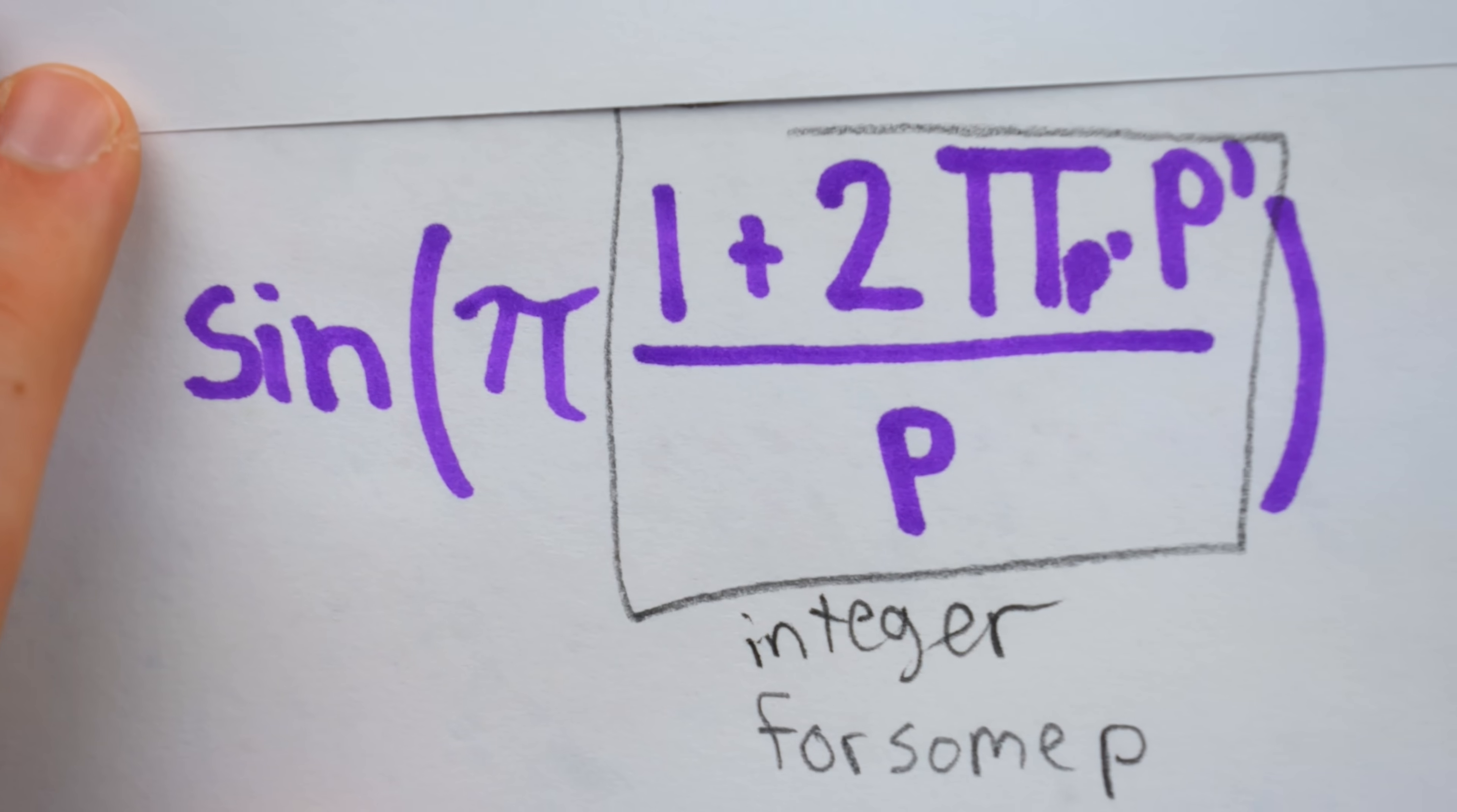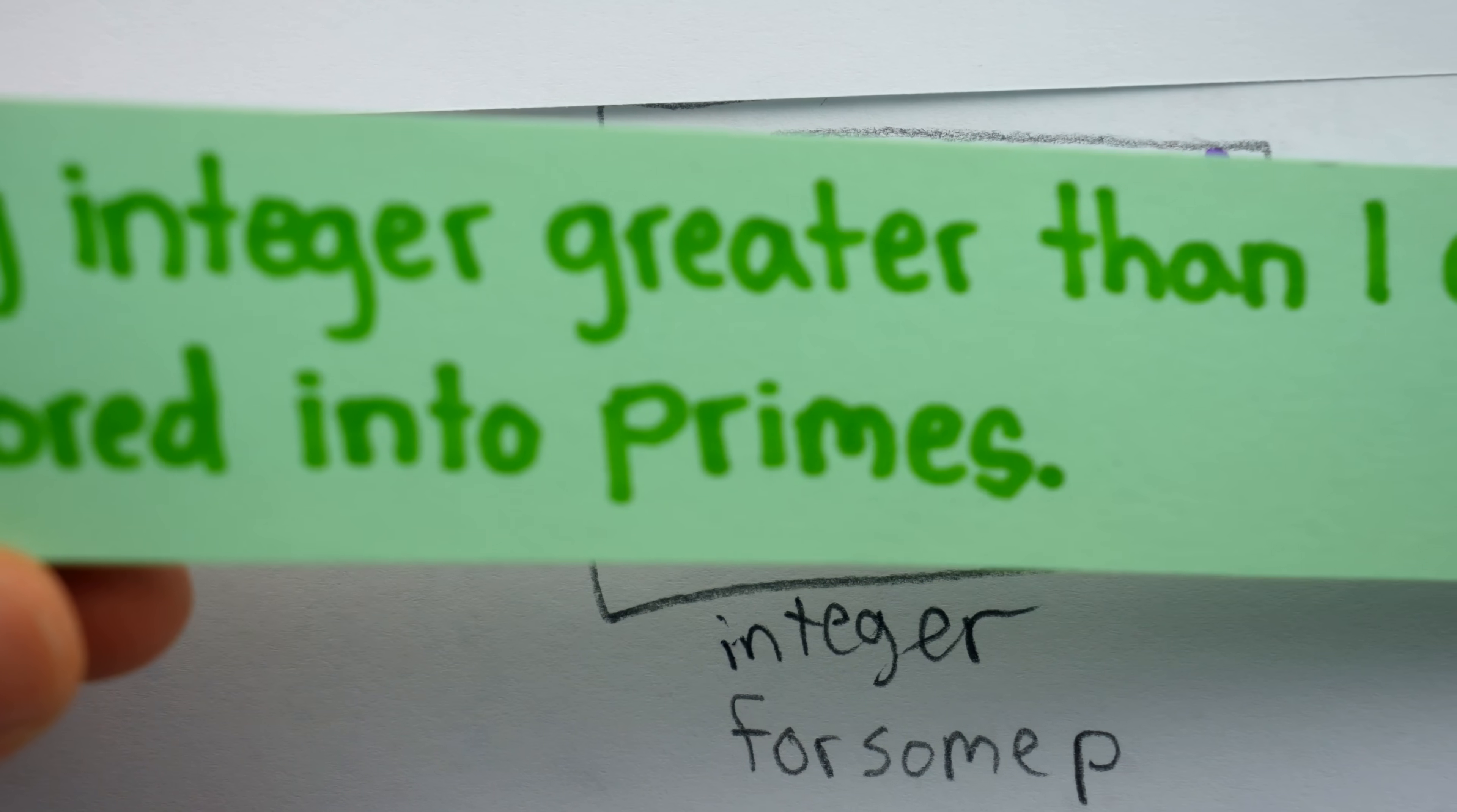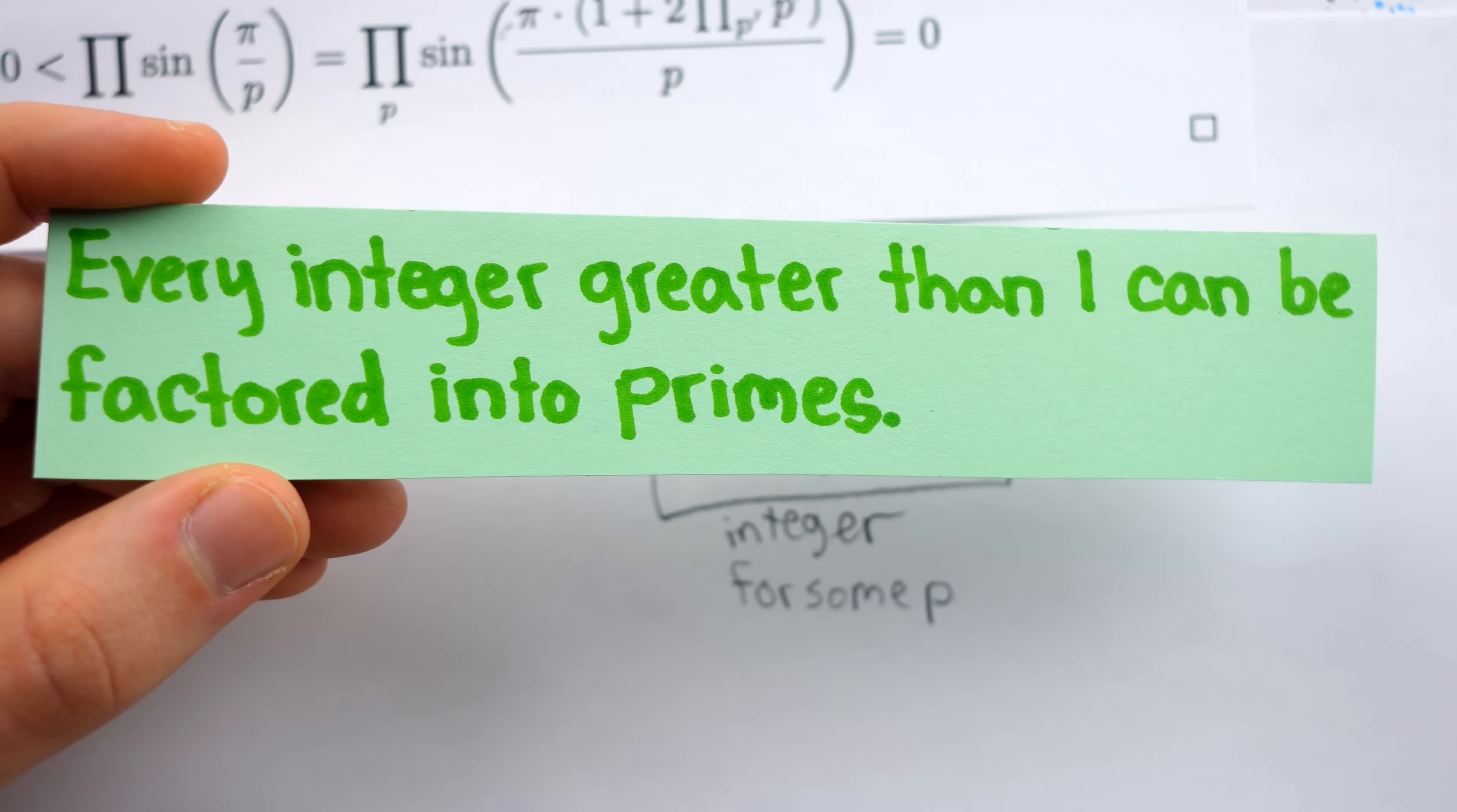And that's because, of course, the top here is an integer greater than 1. It's 1 plus 2 times the product of all the prime numbers. And remember, every integer greater than 1 can be factored into primes. So every integer greater than 1 has some prime factors.